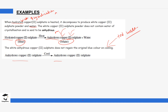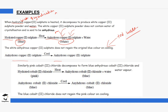Another compound that behaves similarly is cobalt(II) chloride. The hydrated form is pink in color. When heated, water of crystallization is removed and it changes to anhydrous cobalt(II) chloride, which is blue in color — water vapor is produced, so mass changes and a new substance is formed. If you add a few drops of water to the anhydrous cobalt(II) chloride, it turns back into hydrated cobalt(II) chloride, which is pink. This confirms it is a temporary chemical change because it can be reversed.